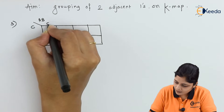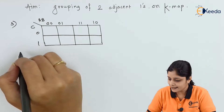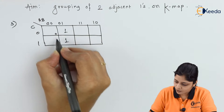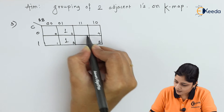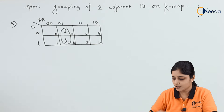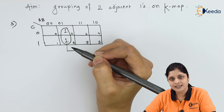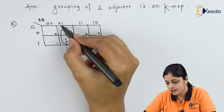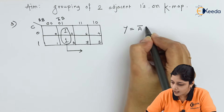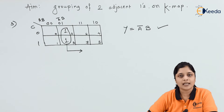For three variables A, B, C, the K-map columns are labeled 00, 01, 11, 10 and rows 0 and 1. Suppose you have ones placed like that — you have to make a group. C is changing, so we will not consider C. We consider only A-bar·B, so your final equation becomes A-bar·B.